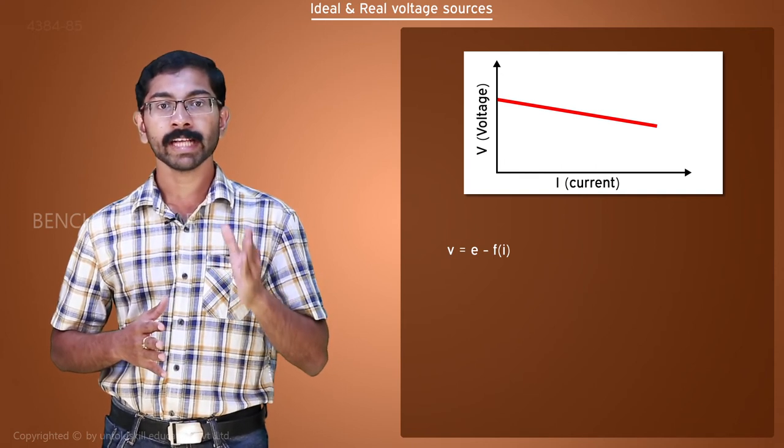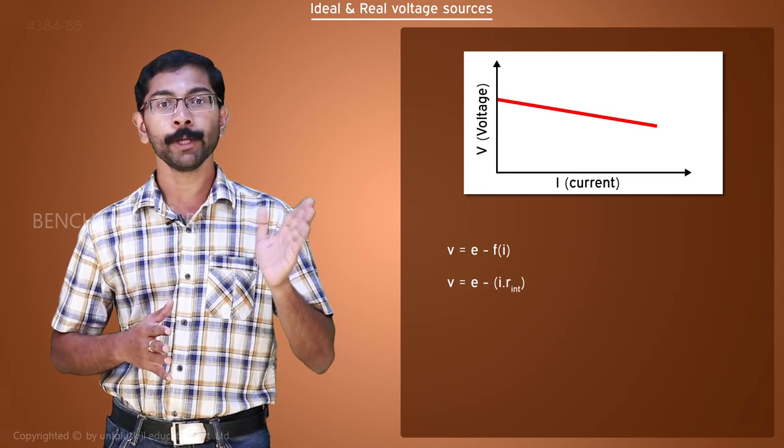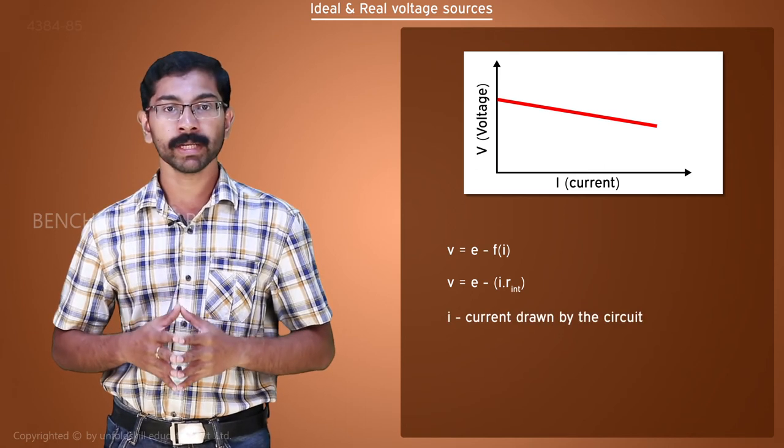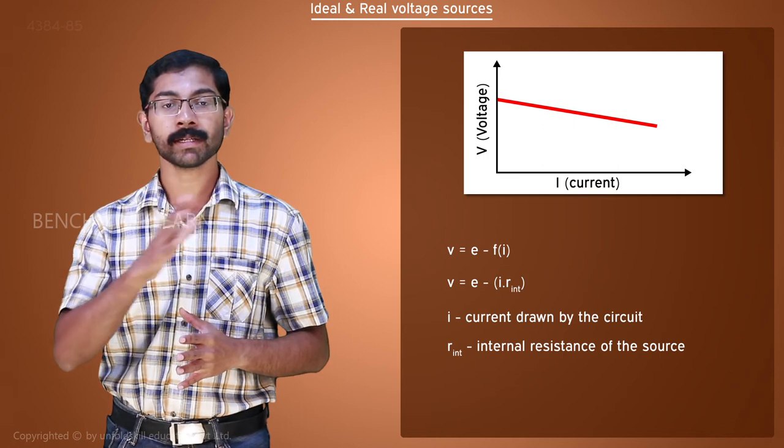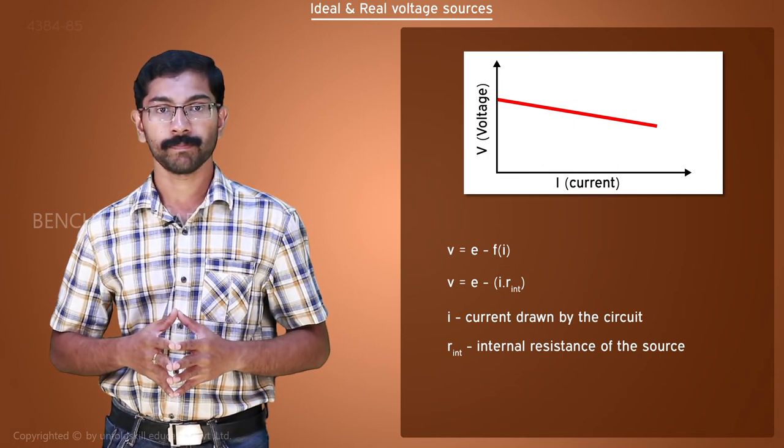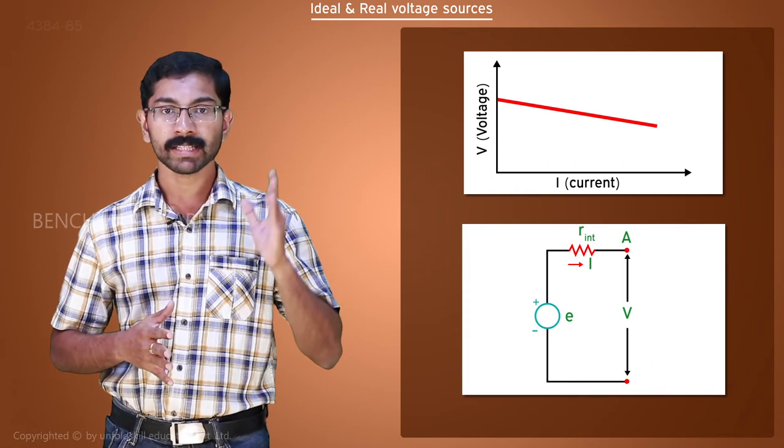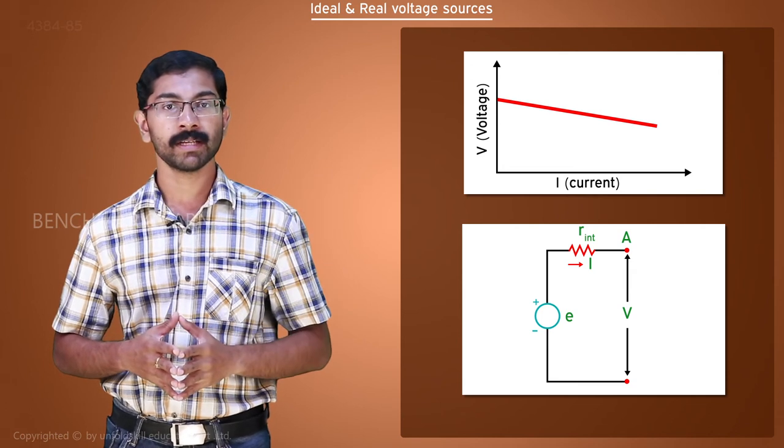Now, the expression gets modified as V is equal to E minus I into R int, where I is the current drawn by the circuit and R int is called the internal resistance of the source. Now, we can draw the circuit symbol of a real voltage source as an ideal voltage source connected in series with a resistance like this.